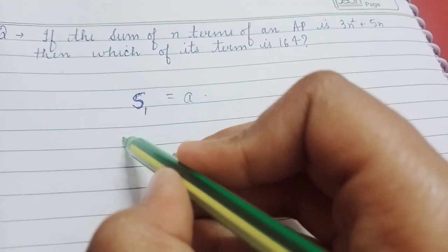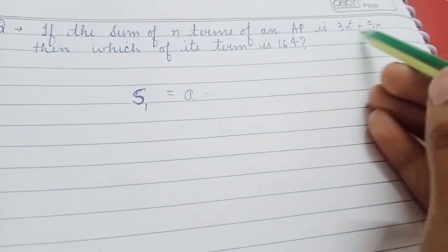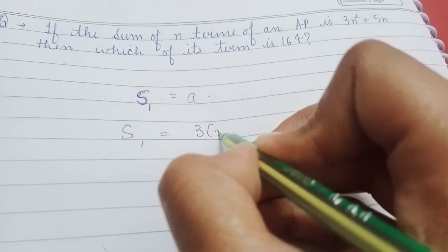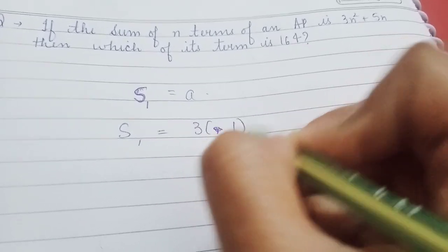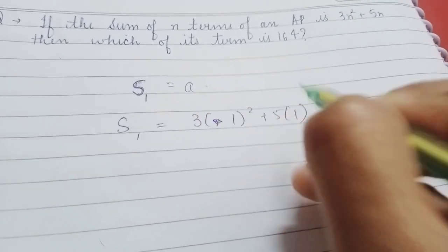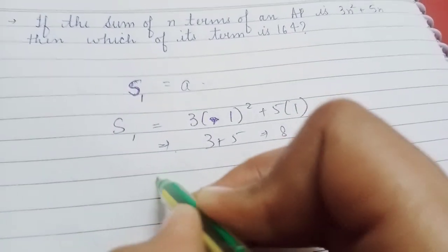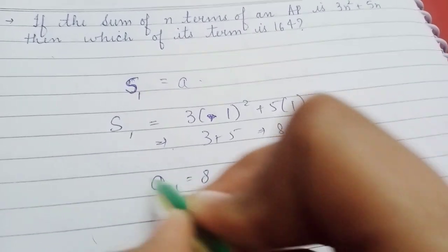So, putting 1 in this 3n squared plus 5, 1, will be 3, 1 squared plus 5 into 1, this will be 3 plus 5, 8. So, first term of AP is 8.